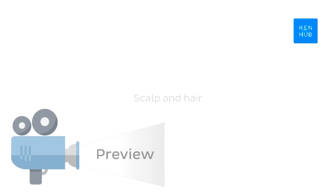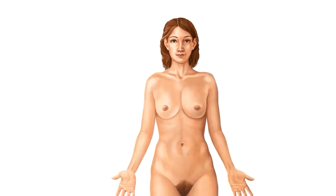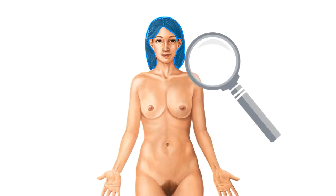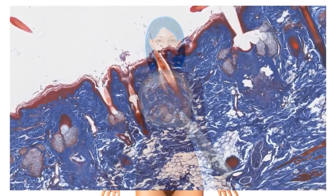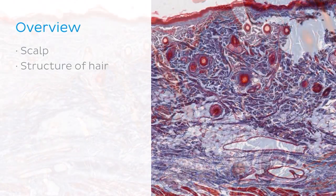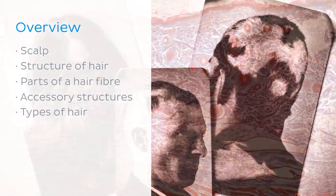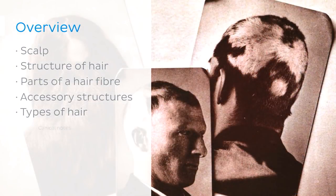Hello everyone, it's Megan from KenHub here and welcome to today's video on the histology of the scalp and hair. In this tutorial we'll get an idea of what hair looks like through the microscope. We'll be discussing the scalp, the structure of hair, the parts of a hair fibre and the accessory structures associated with hair fibres. We'll also cover the types of hair we have on our body and a clinical scenario where knowledge of hair growth is important.